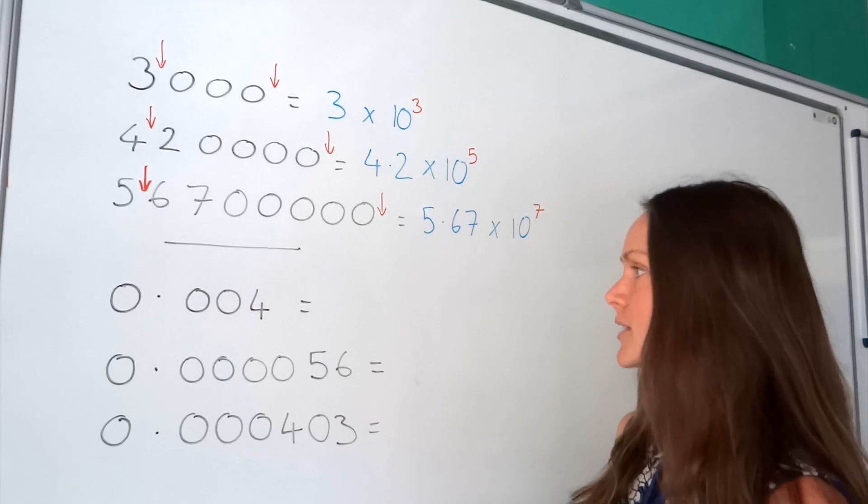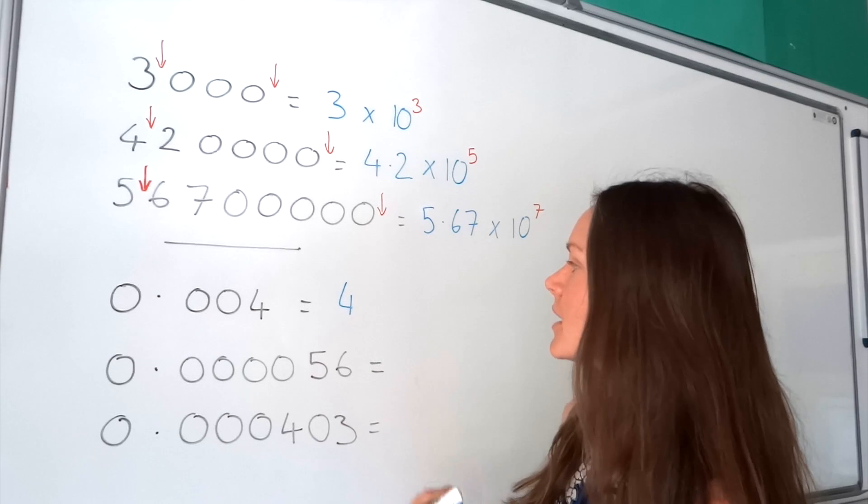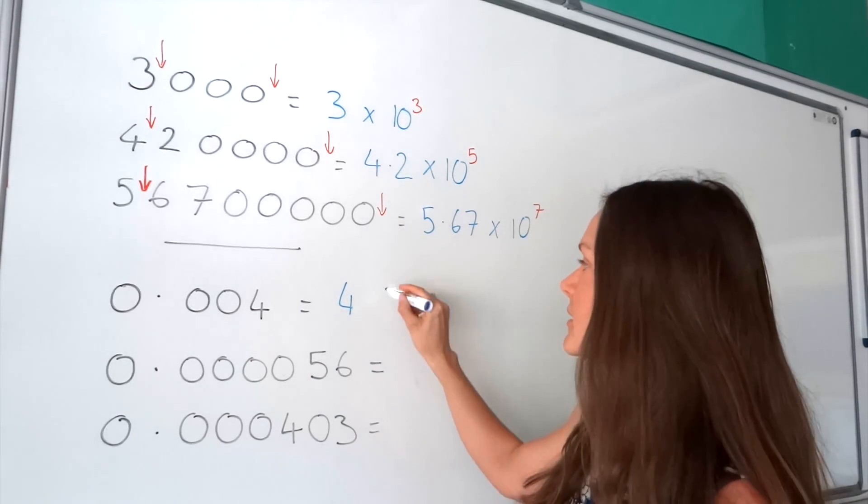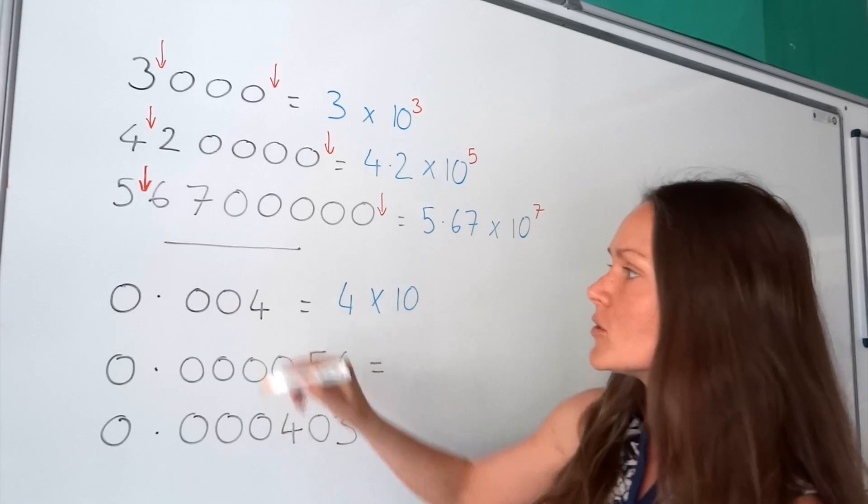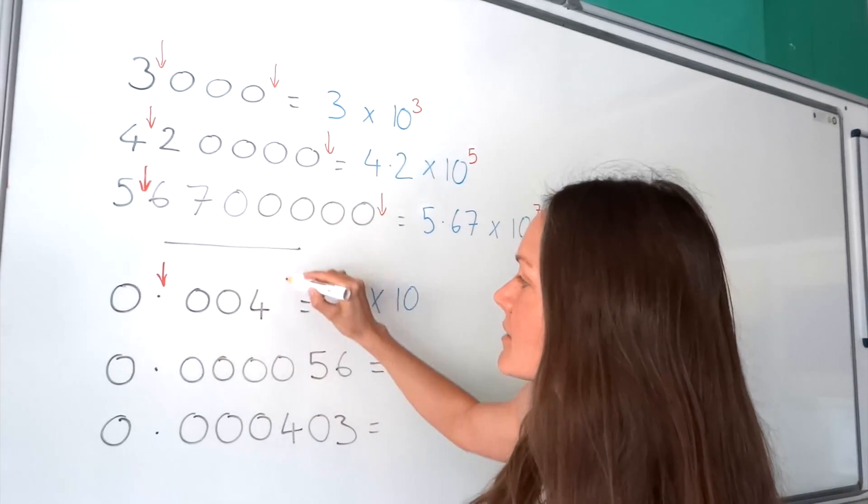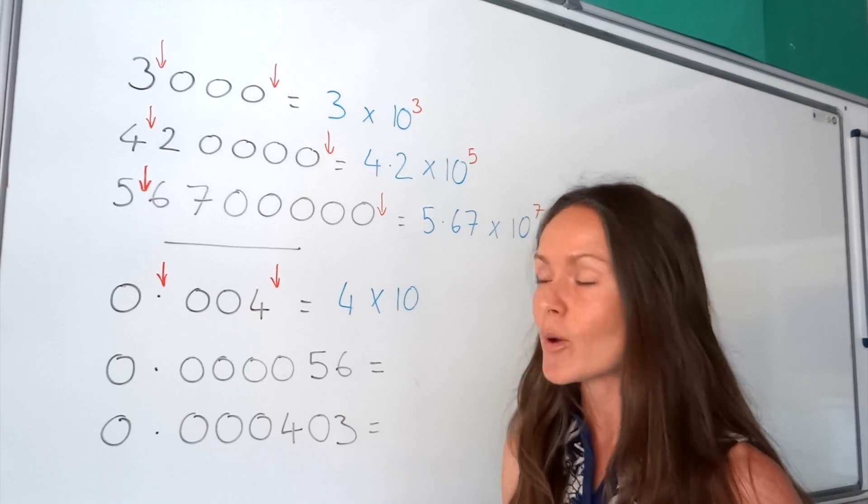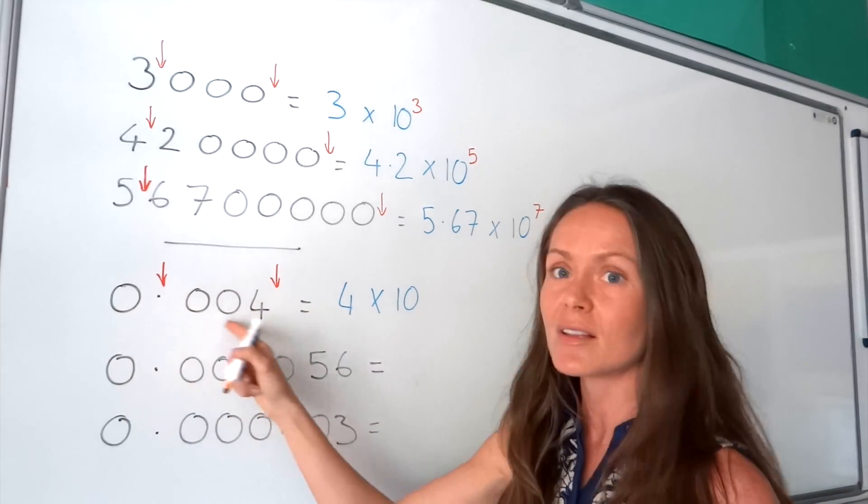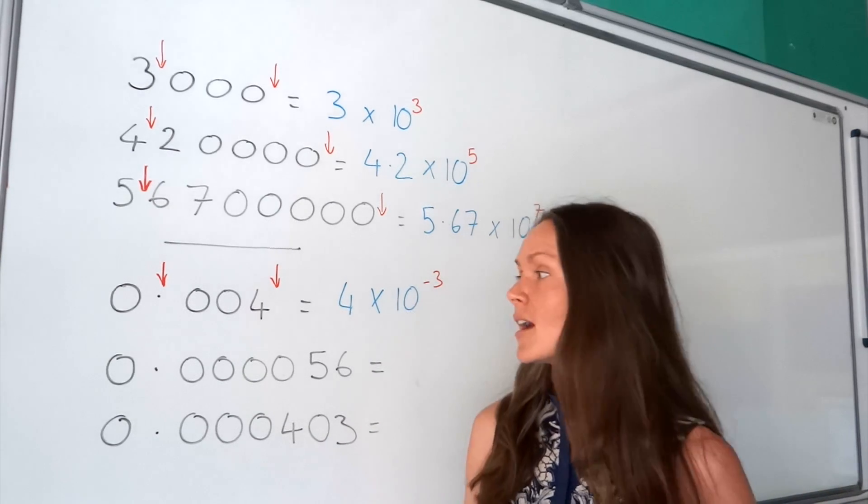So, let's do the first one. So, to make this number between 1 and 10, I need to write 4. Then I'm going to write times 10, just as before. I'm also going to check to see how many places the decimal has moved. And it's moved 3 times. But remember, it's a negative power because it's a small number. So this time, it's negative 3.